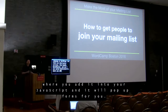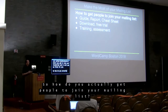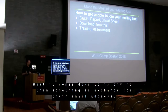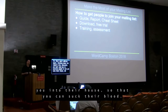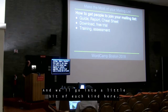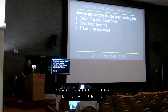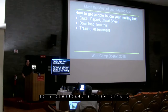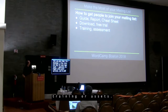Now let's say you've got a form on your website — how do you actually get people to join your mailing list? What it comes down to is giving them something in exchange for their email address. Thinking about the vampire rule — you want some way to convince people to let you into their house. These are often called lead magnets or content upgrades, broadly broken down into three groups: guides, reports, and cheat sheets; actual downloadable assets or free trials; and for more high-touch, higher-price-point services, training or assessments.